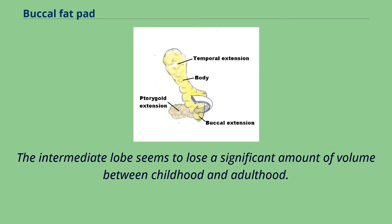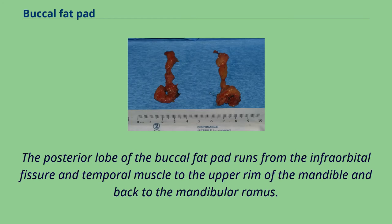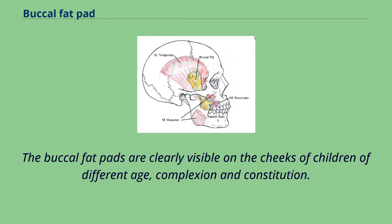The intermediate lobe seems to lose a significant amount of volume between childhood and adulthood. The posterior lobe of the buccal fat pad runs from the infraorbital fissure and temporal muscle to the upper rim of the mandible and back to the mandibular ramus. The buccal fat pads are clearly visible on the cheeks of children of different age, complexion, and constitution.